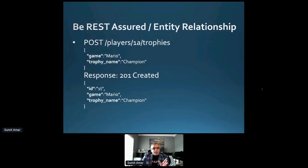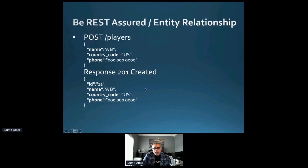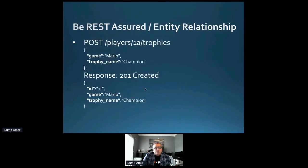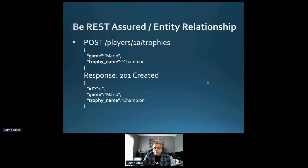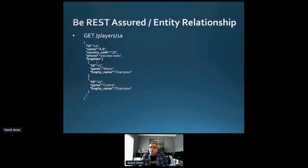Taking it a step further, with /players/1a — the entity ID just created — we want to add a trophy for this player. /players/1a gets us to the instance of this player, and for that instance we want to add a trophy. So we POST to the trophies collection with a couple of fields, resulting in a 201 Created with trophy ID 1t. When we retrieve /players/1a, the collection of trophies is also returned with the player's data.